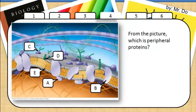Number 4. From the picture, which is peripheral proteins? That would be A. Peripheral as in peri as in Latin for around, such as perimeter.